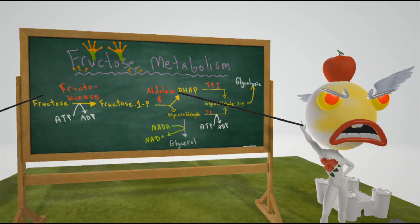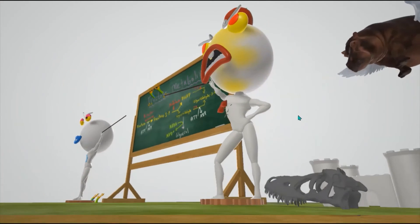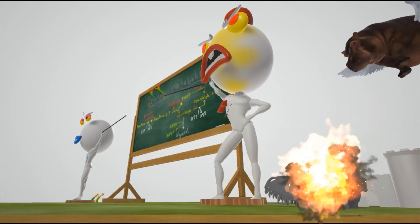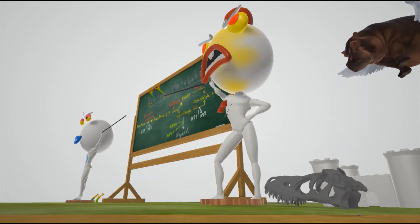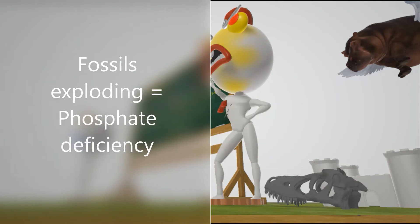As fructose 1-phosphate accumulates, it causes a decrease in availability of phosphate. Phosphate won't be as available anymore, since aldolase B is not metabolizing fructose 1-phosphate. Here we have the fossils on the floor that the teacher likes to bring to class, and it's exploding. The fossils exploding is to help us remember the deficiency in phosphate. Fossils for phosphate.